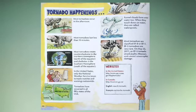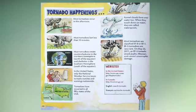Tornado happenings: Most tornadoes occur in the afternoon. Most tornadoes last less than 10 minutes. Most tornadoes rotate counterclockwise in the northern hemisphere (north of the equator) and clockwise in the southern hemisphere (south of the equator). In the United States, only the National Weather Service issues tornado watches and warnings nationwide. Tornadoes have occurred in all 50 states of the USA. Funnel clouds form over water too — when they touch down on water, they are called waterspouts.